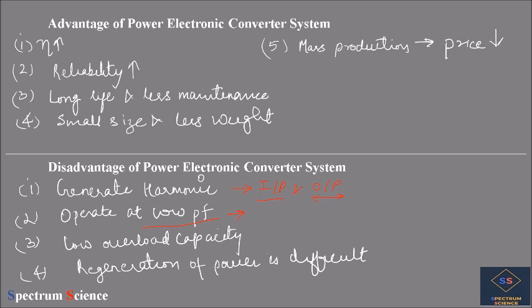Third, power electronic converters have low overload capacity. Therefore, the converter must be rated to handle momentary overloads, which increases the cost. Fourth, regeneration of power is difficult in power electronic converter systems.